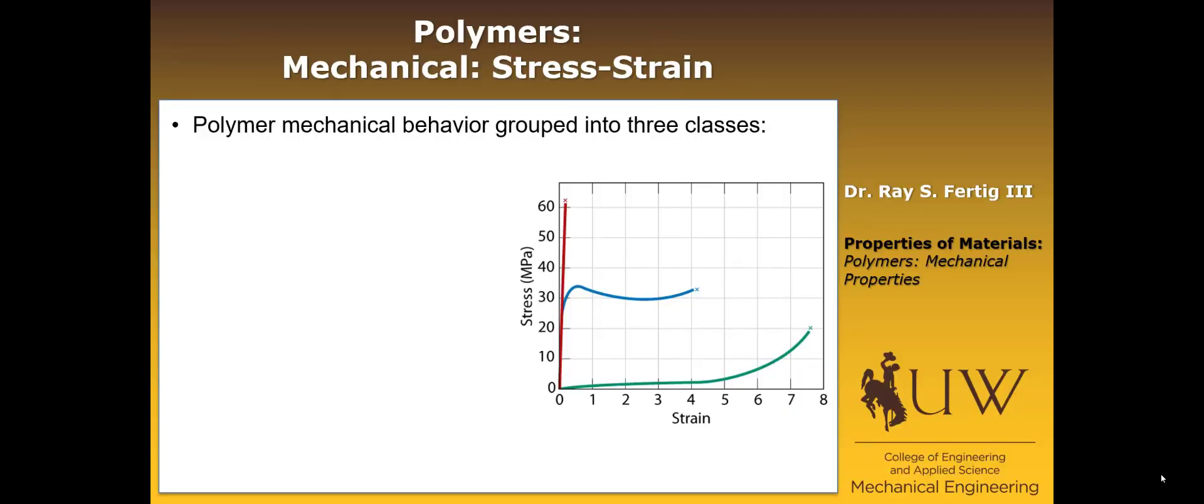Typically mechanical behavior can be grouped into three different classes. The first class is brittle elastic, which just looks like a straight-line elastic curve and then fails abruptly. The second class is elastoplastic, so it initially loads up elastically, it yields, and then plastically deforms, and then finally it ultimately fractures.